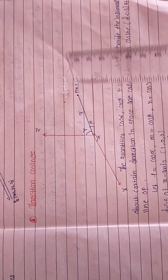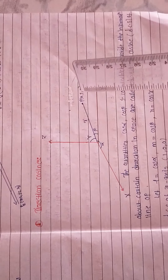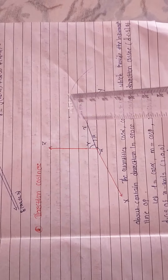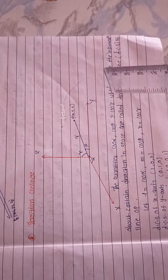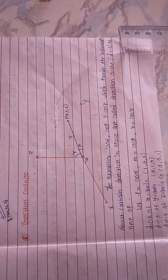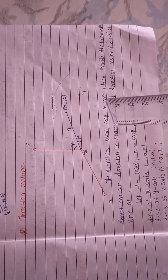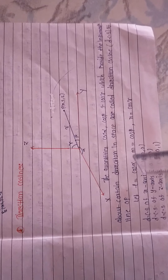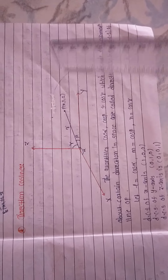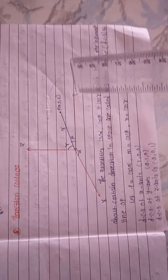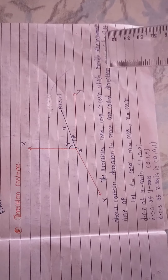Next we will study direction cosines. Suppose we have a point P with Cartesian coordinates (x, y, z) in three-dimensional space, and we join this point P to the origin with a line of length r. The angle made by this line with the x-axis is α, the angle with the y-axis is β, and the angle with the z-axis is γ. The quantities cos α, cos β, cos γ, which provide information about a certain direction in space, are called the direction cosines (DCs) of line OP. For convenience, we use the notation l = cos α, m = cos β, n = cos γ.